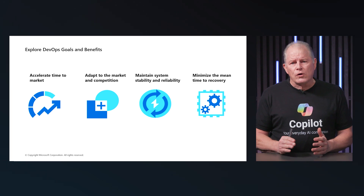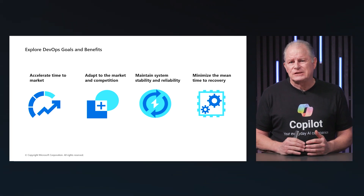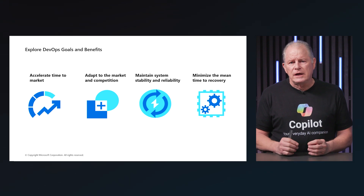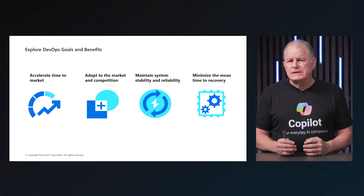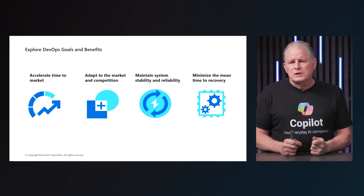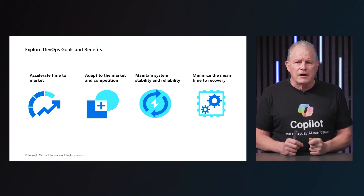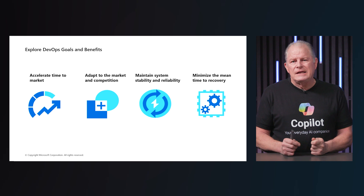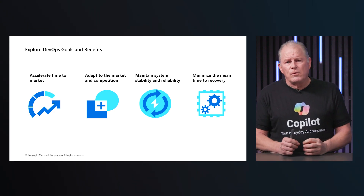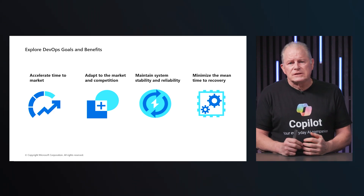Some core goals and benefits remain, such as increasing velocity and quality of software delivery, bringing development and operation teams together, eliminating the 'throw it over the fence' behavior, the shared responsibility and accountability of a product from ideation to management in production, and compatibility with design thinking, agile and lean philosophies. But DevOps itself has evolved.